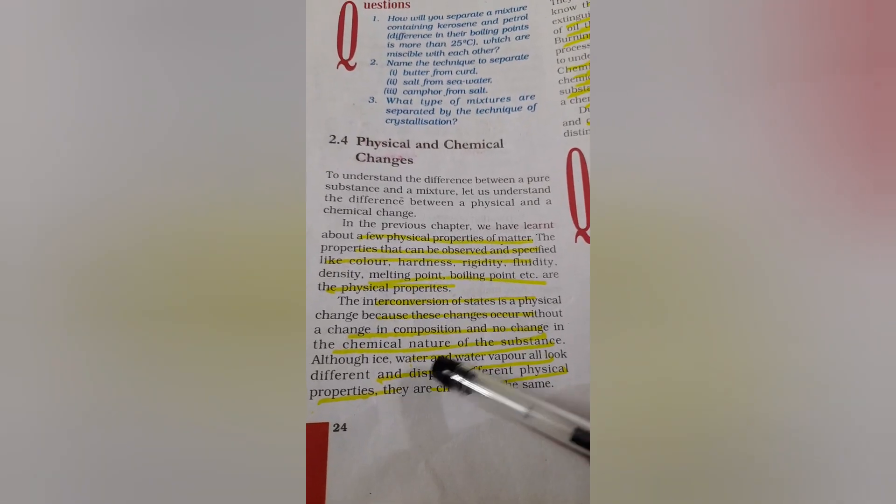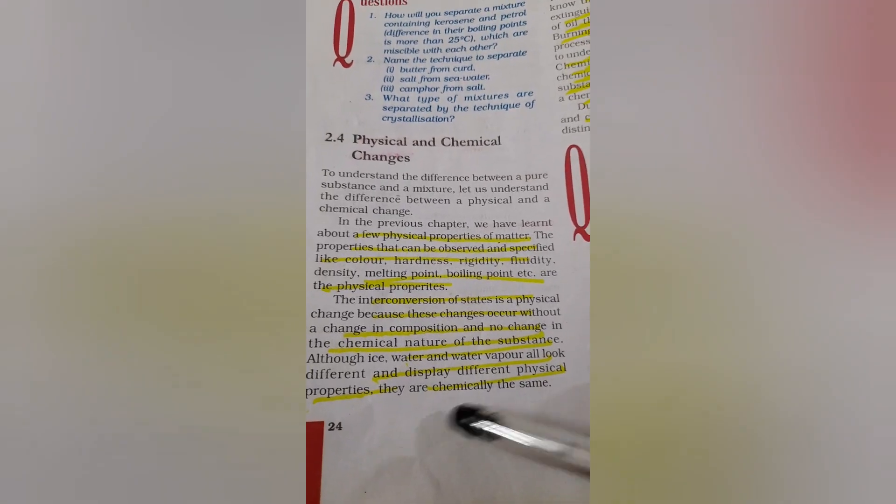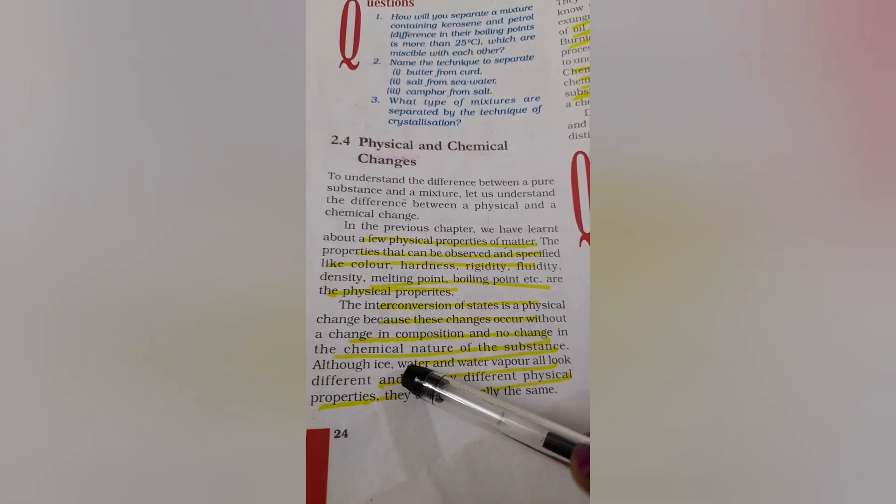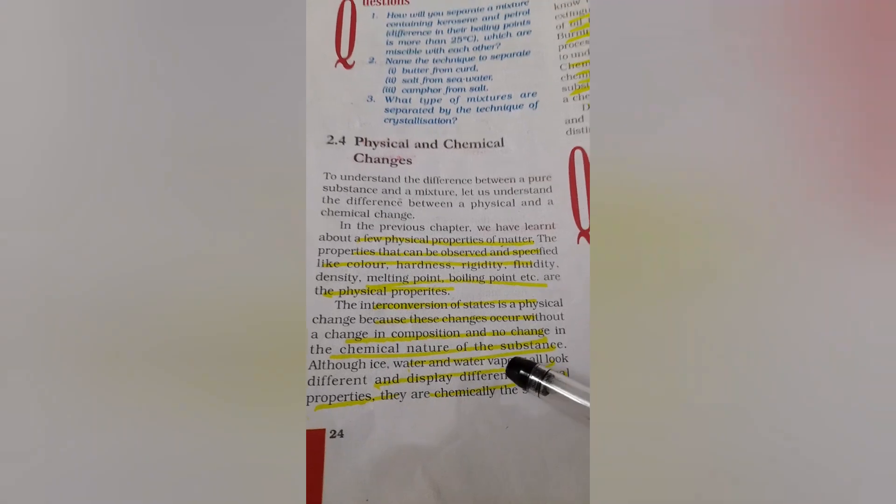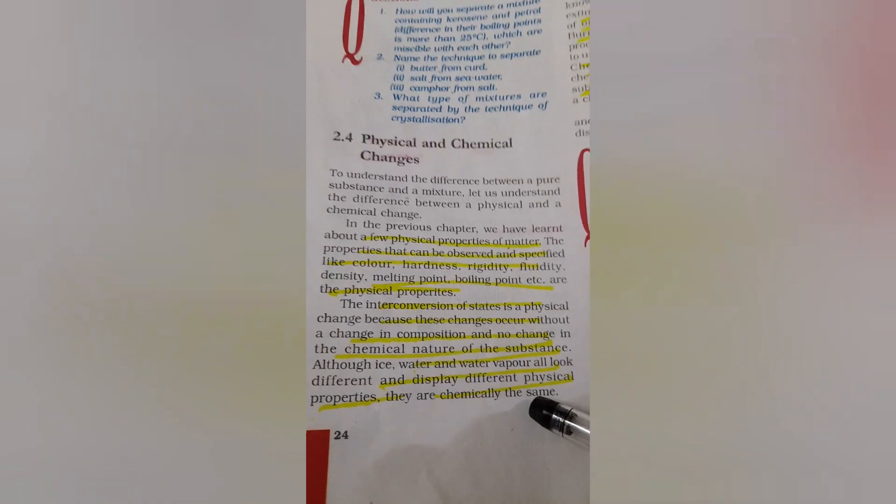For example, if you take ice, water and water vapor they all look different and their physical properties are also different. Ice is a solid, water is a liquid and water vapor is a vapor, but their composition, chemically, is the same.